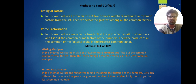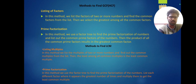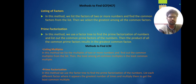Methods of finding LCM, or least common multiple: first is listing multiples. In this method we find multiples of two or more numbers and find out the common multiples from the list. The least among all common multiples is the least common multiple. Second is prime factorization — we use a prime tree to find the prime factorization of numbers, then list each different factor where it appears the greatest number of times and multiply to get the least common multiple.